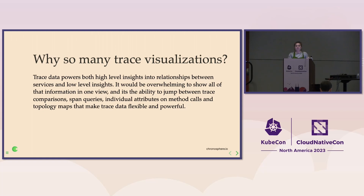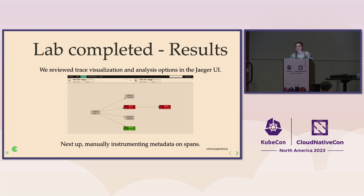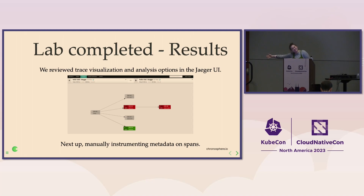You can go ahead and stop the pod, or if you want to keep playing with the visualizations you can. We reviewed our trace visualizations, got a little more comfortable with the Jaeger UI. Now is the final lab on manually instrumenting metadata. This is the change we'll make in our instrumentation loop: make code changes, rebuild our image, run our container, generate traces by sending requests to our app, load them up in Jaeger, and see the results. So we're adding one step to our instrumentation feedback loop, but it's still pretty manageable.